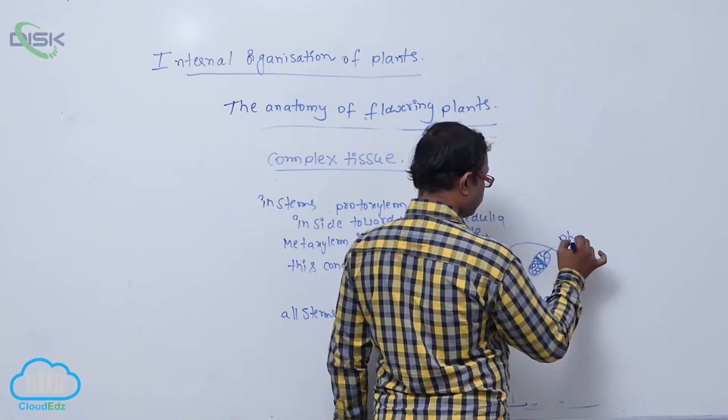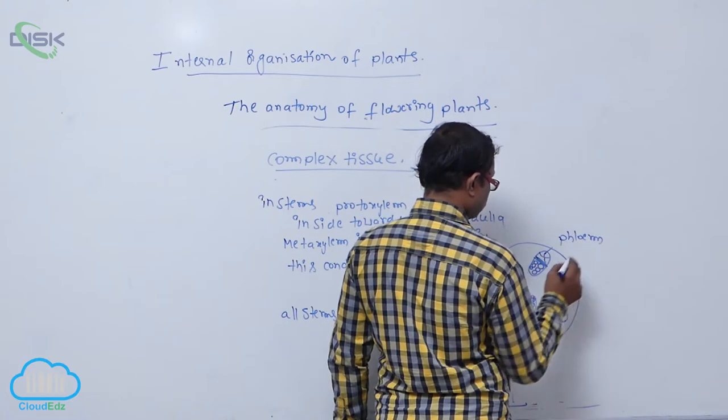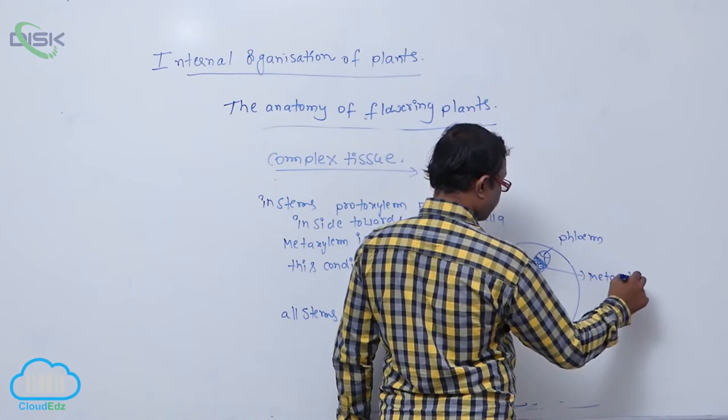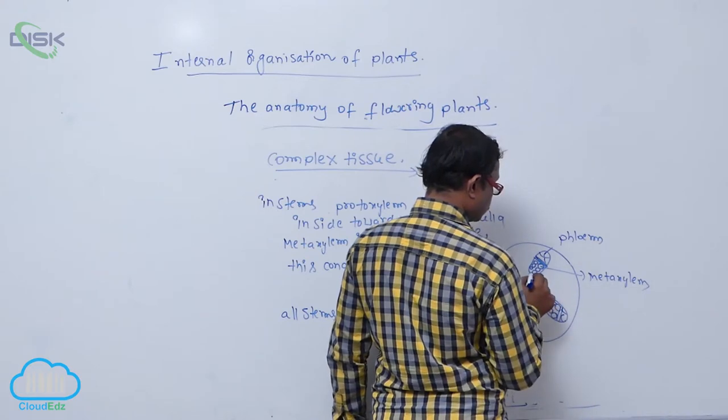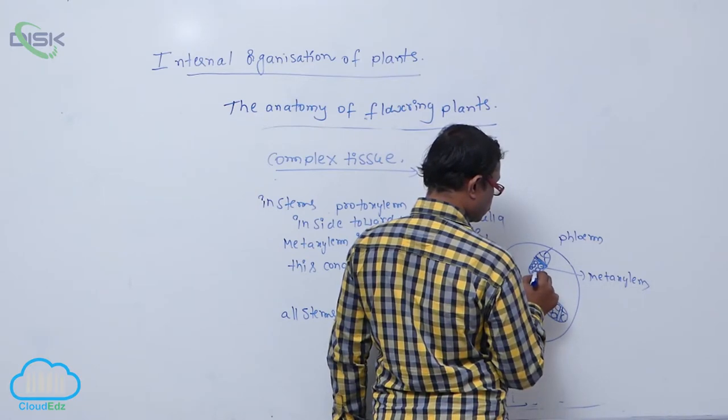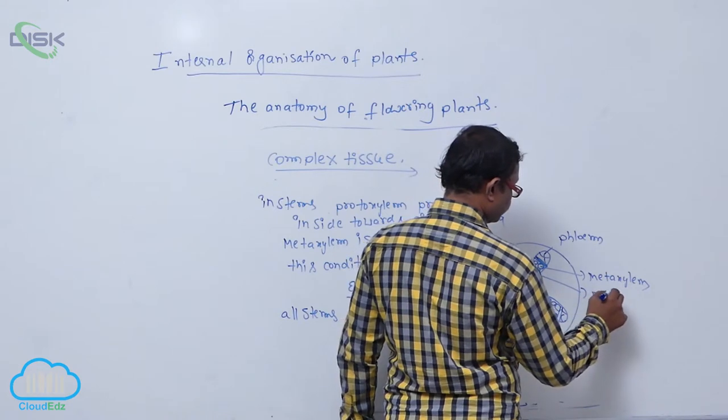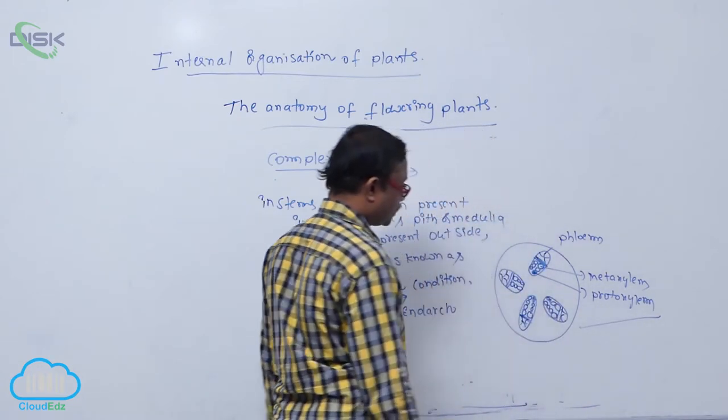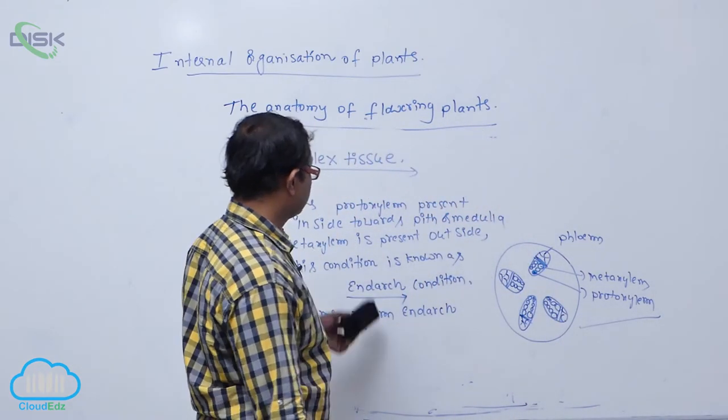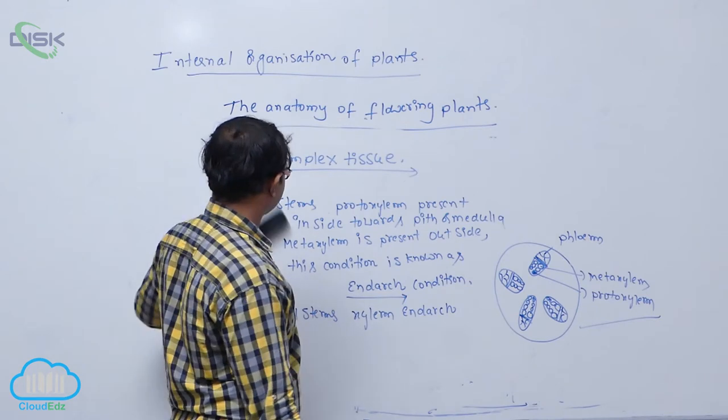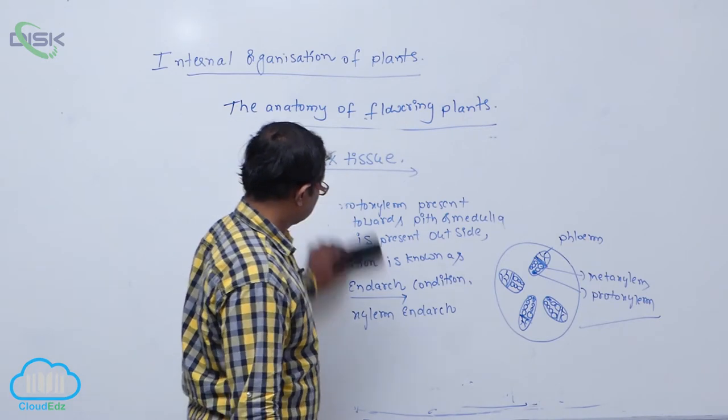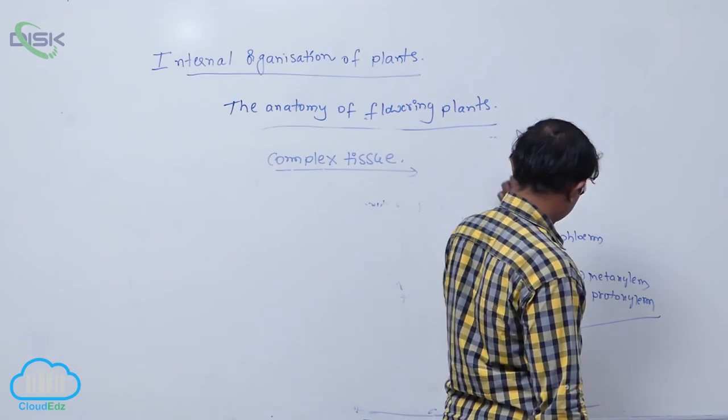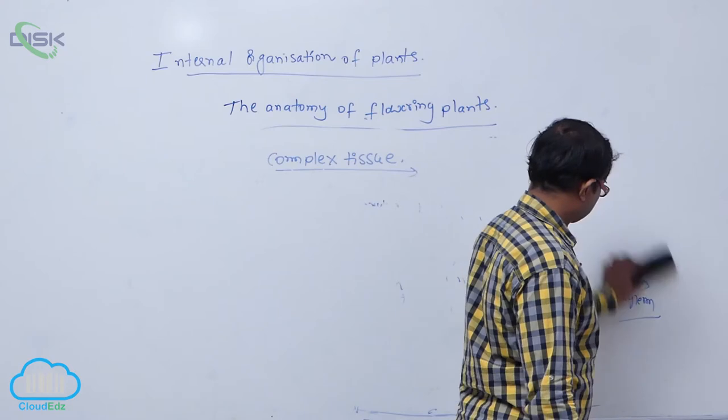It is a phloem, then it is a metaxylem. After that it is known as a protoxylem. It means protoxylem is present inside, that is known as endarch condition.